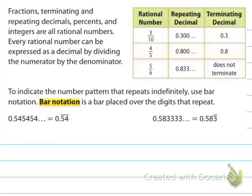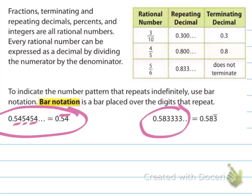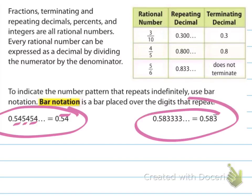Every rational number can be expressed as a decimal by dividing the numerator by the denominator — top dog in the doghouse. To indicate the number pattern that repeats indefinitely, use bar notation. Bar notation is a bar placed over the digits that repeat. In this example the 54 is repeating, so the bar is over the 5 and the 4. In this other example, only the 3 is repeating, so the bar is only over the 3.